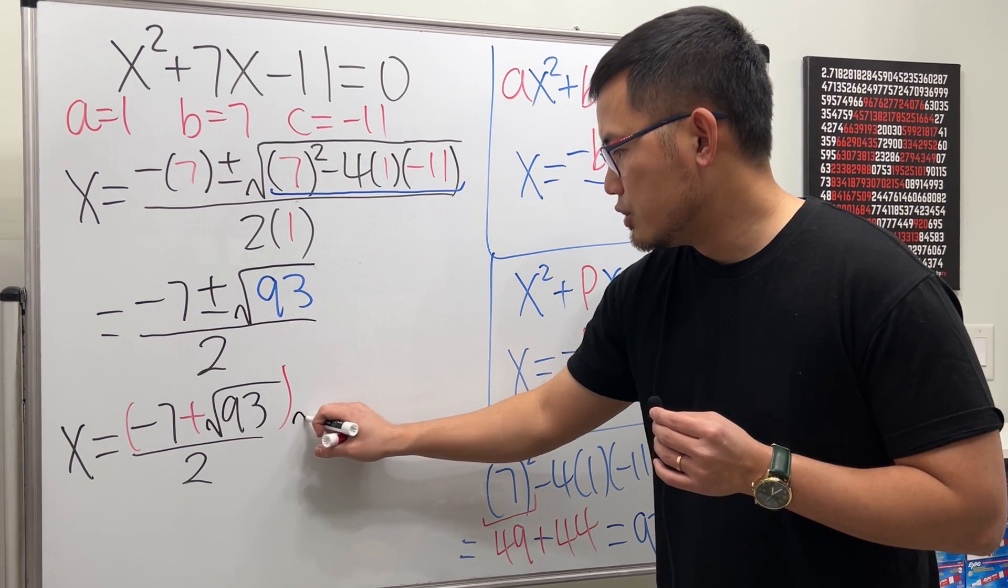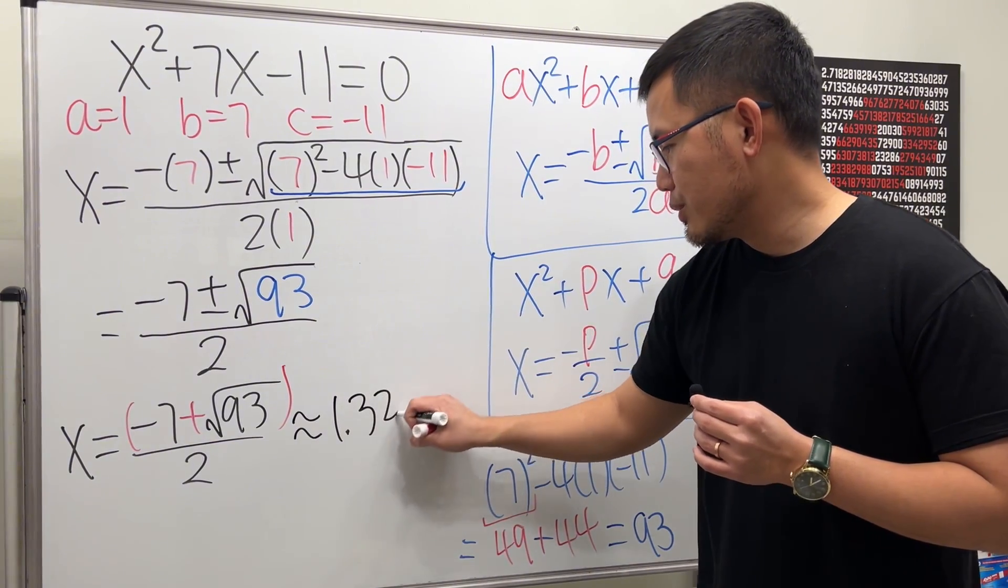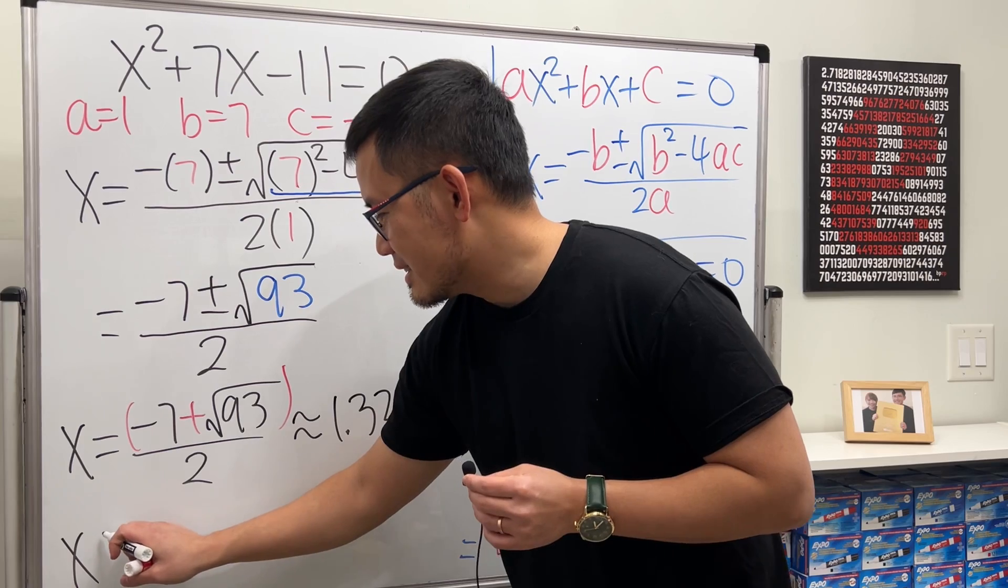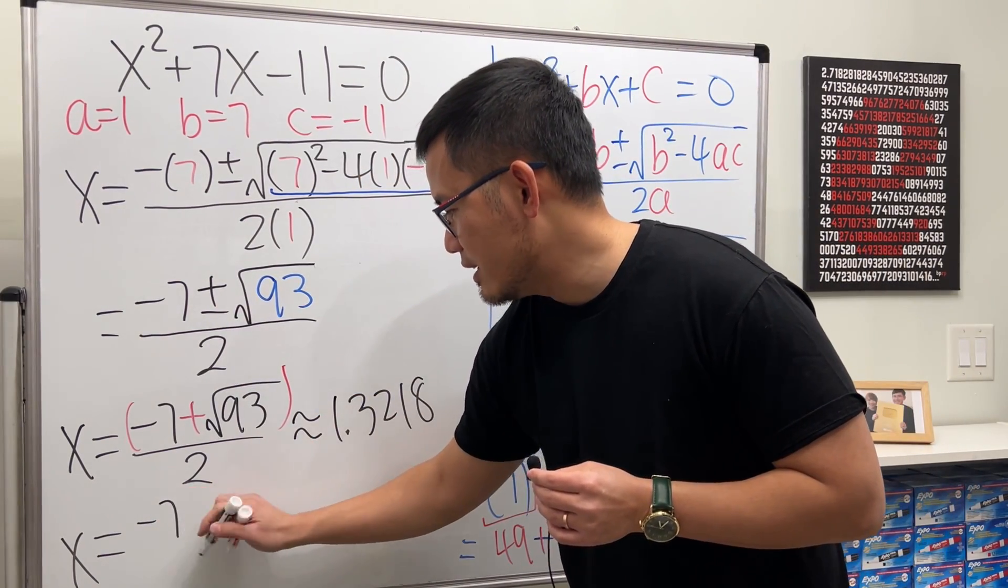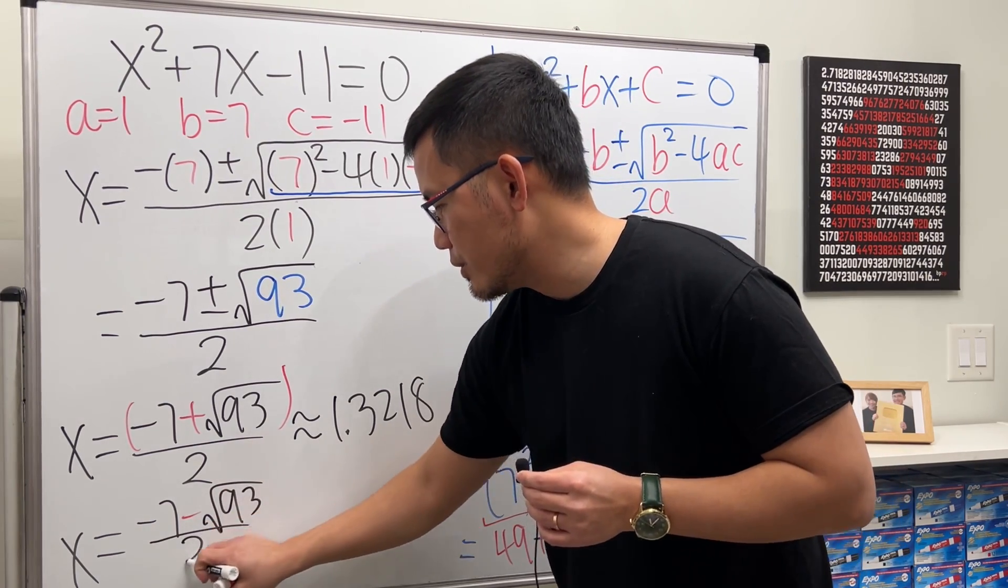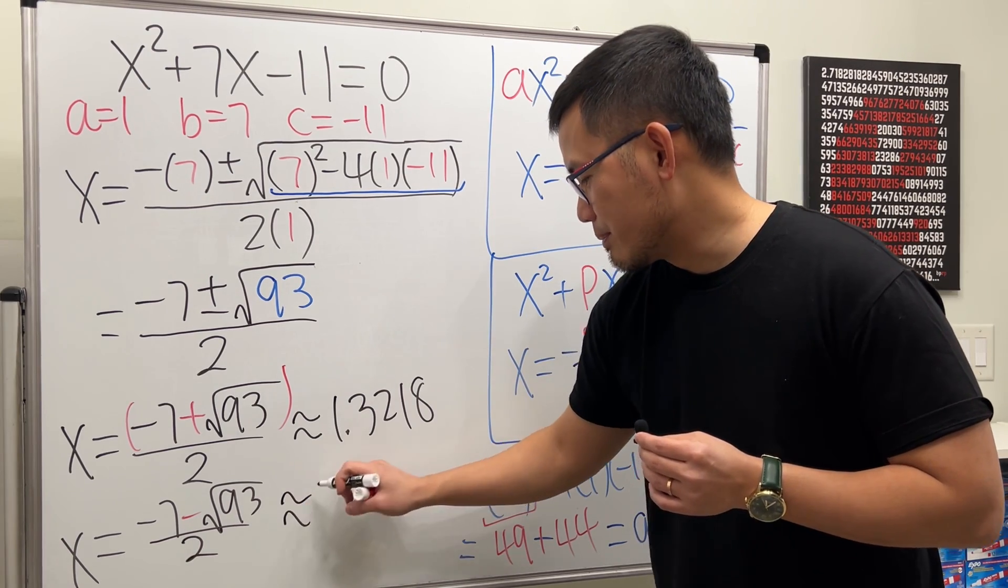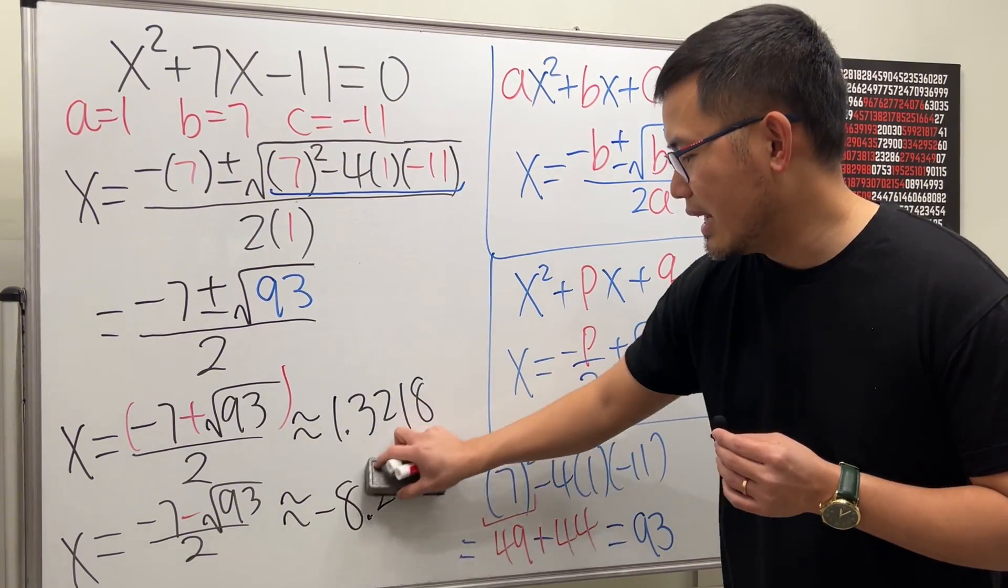And this right here should give you approximately 1.3218. Yeah, I wrote down the answer right here, but anyway. Next, x is equal to the one with minus, so -7 - √93 over 2. And then you get on your calculator, this right here is approximately -8.3218.